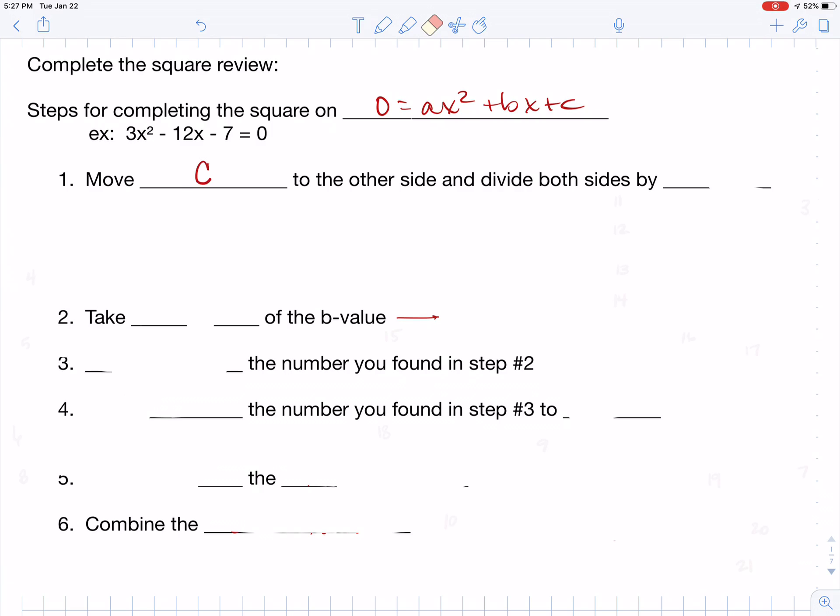But the way that you're going to do that, first of all, is you want to move c to the other side, and you then want to divide on both sides by your a. So get c over to the other side, divide both sides by a. I'll do an example with you here in just a moment.